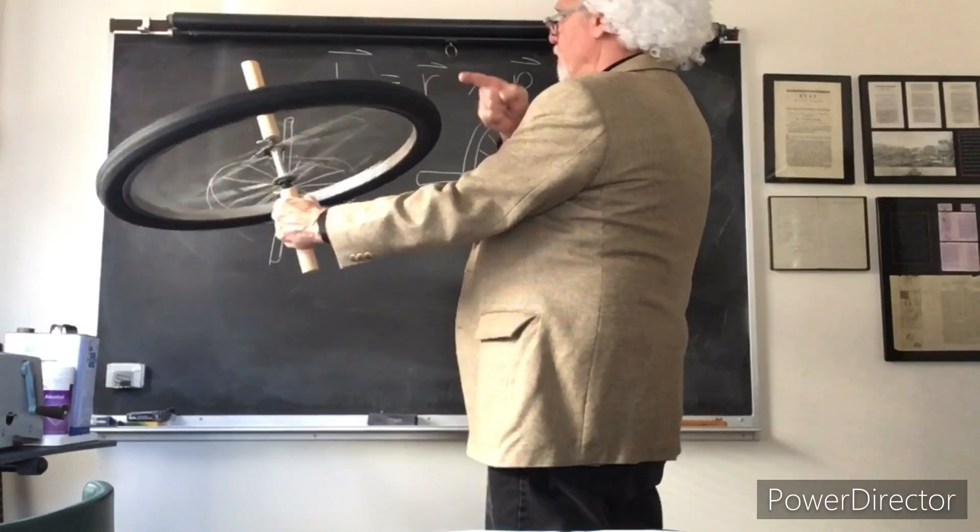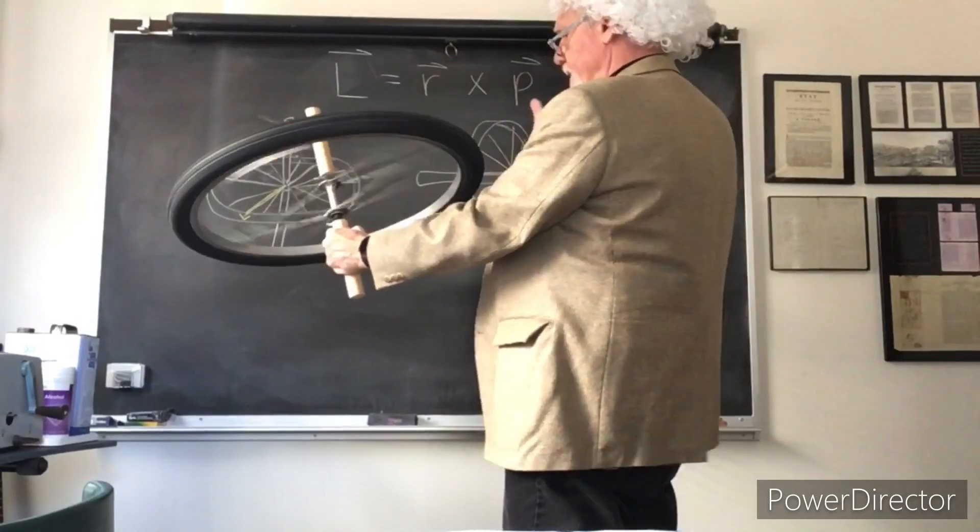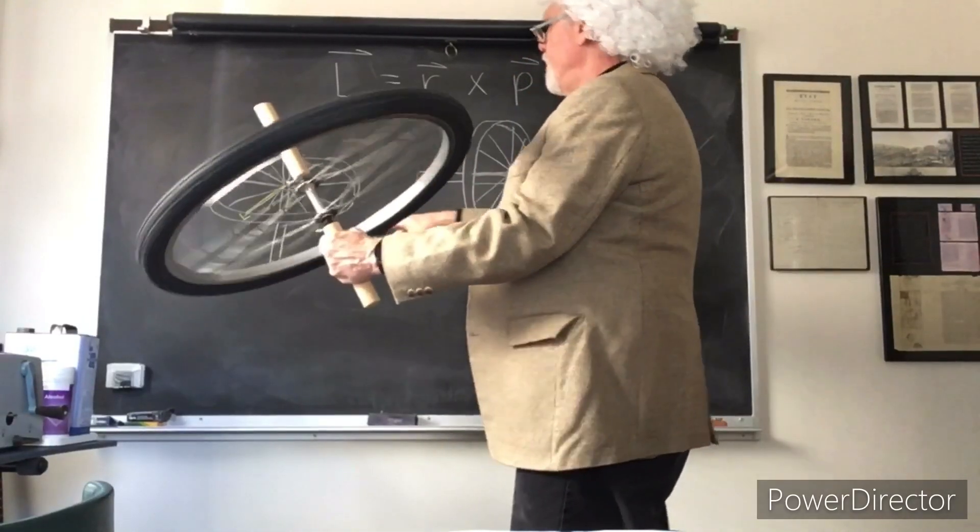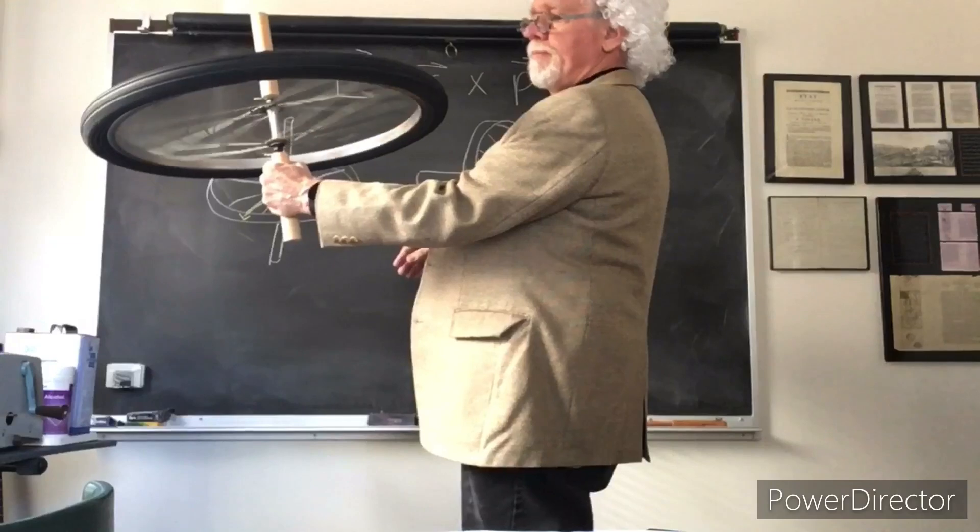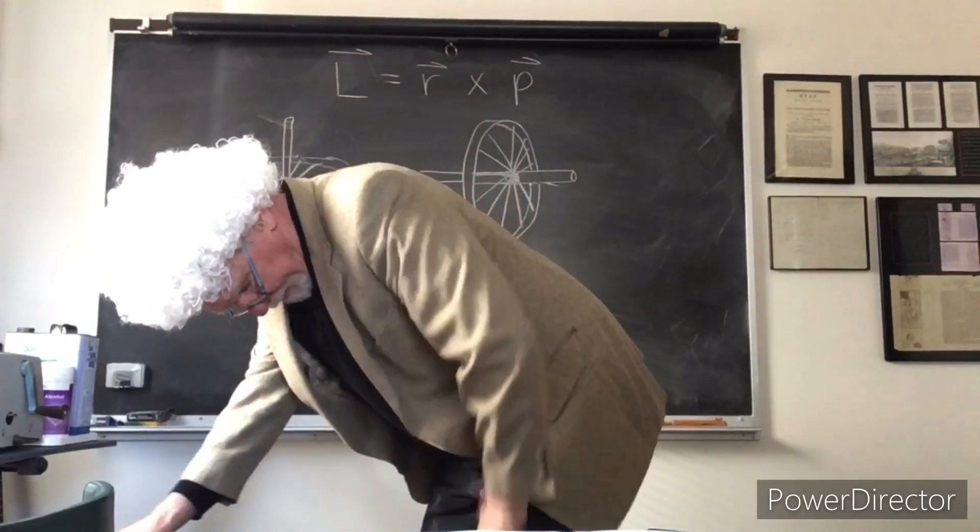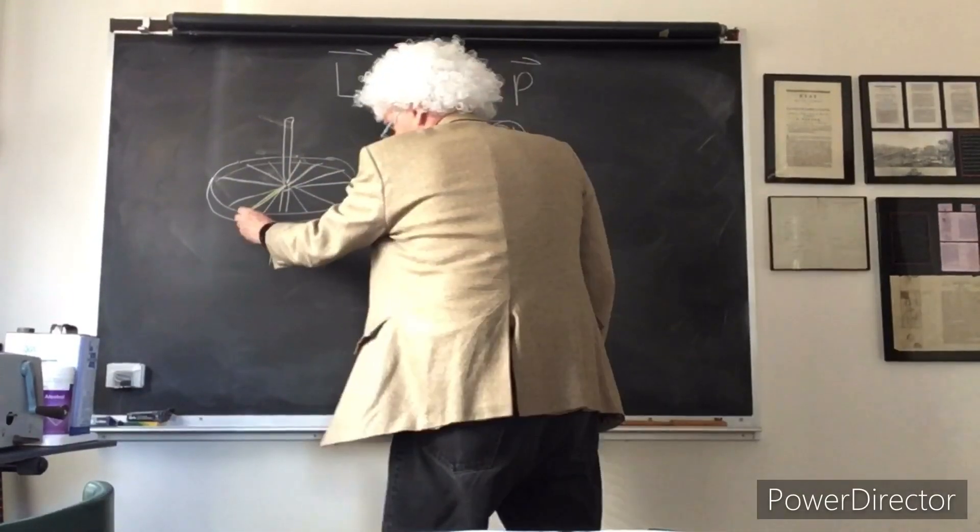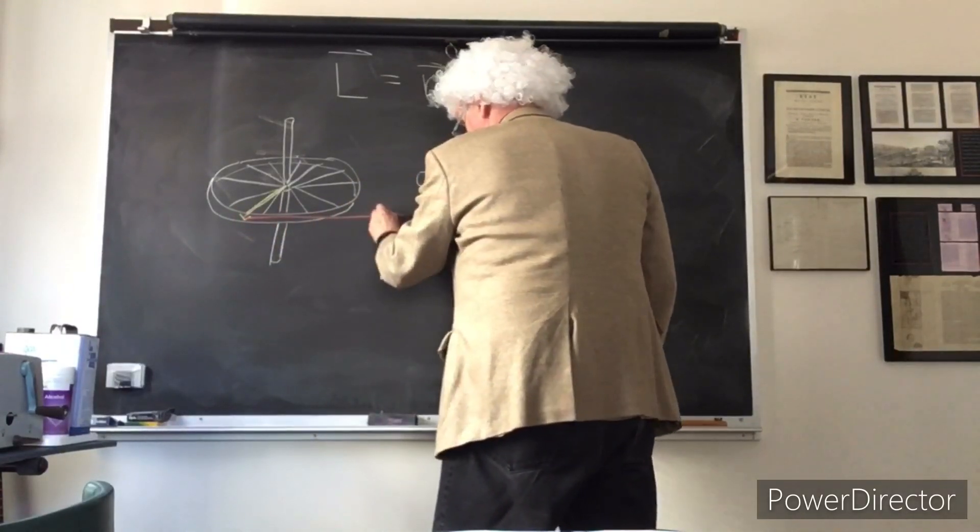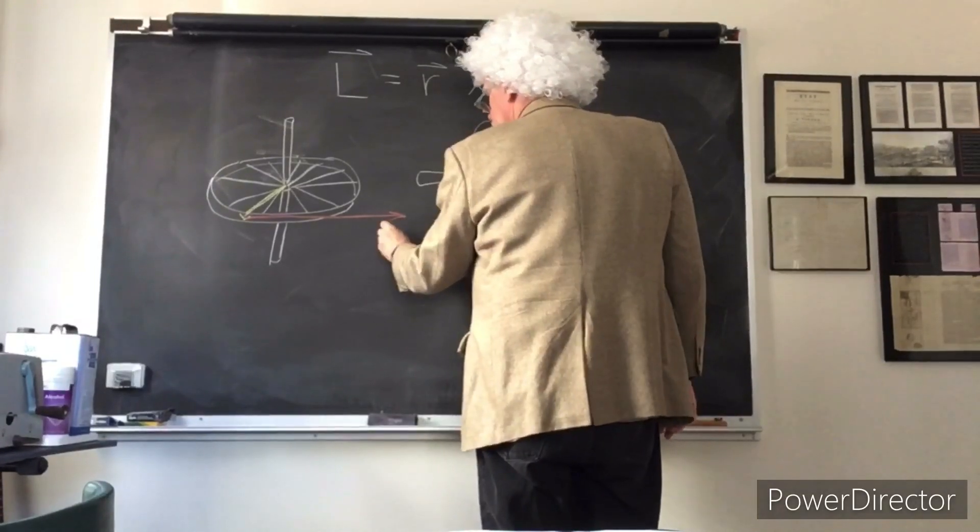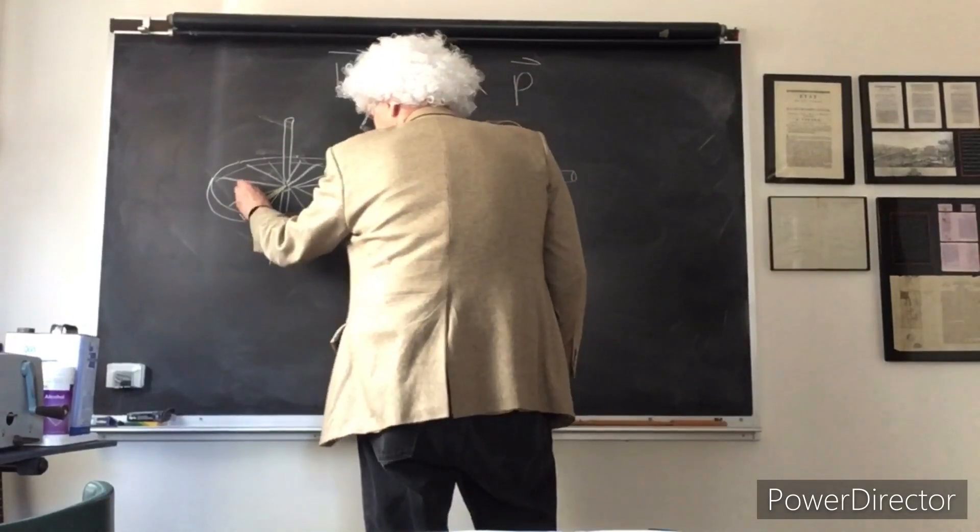And so the momentum vector is perpendicular to R and it's going in this direction. So that's P and this is R.